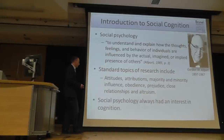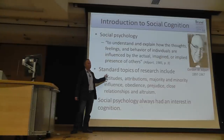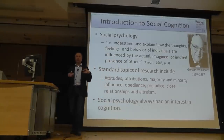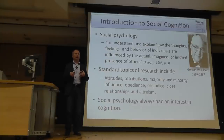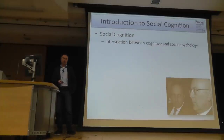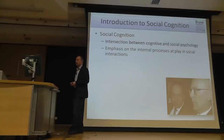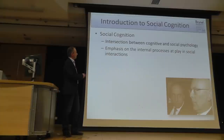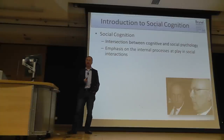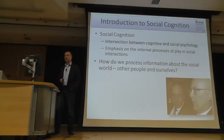Traditionally there has been a rather close link between social psychology and cognition, because many things like forming attributions are based on cognitive concepts like schemas and memory traces. In social cognition, we look at the intersection between cognitive and social psychology, emphasizing the internal processes which happen in our mind in social interactions. The question is: how do we process information about the social world, like other people and ourselves?